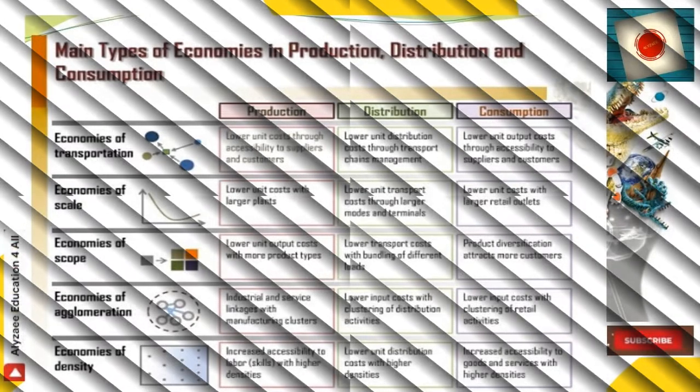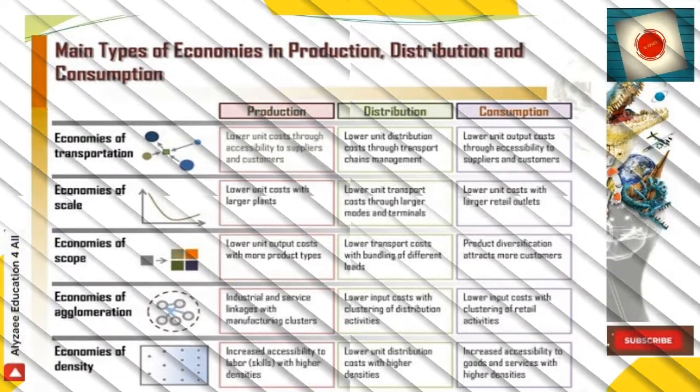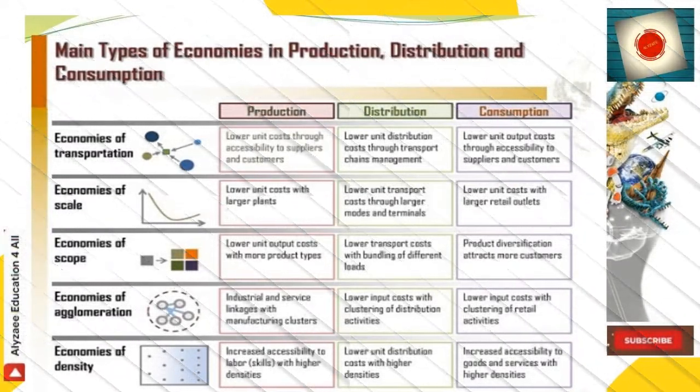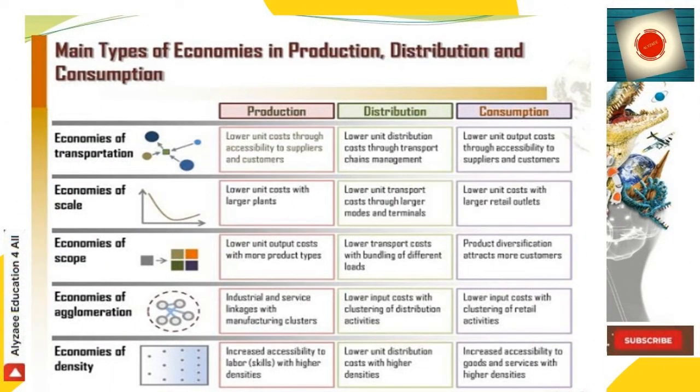The main types of economies in production, distribution, and consumption include: economies of transportation, economies of scale, economies of scope, economies of agglomeration, and economies of density.